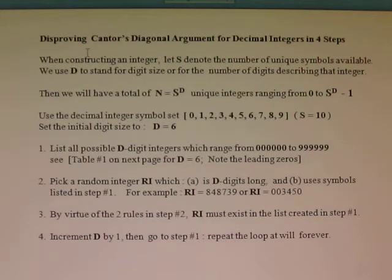Step 1: List all possible d-digit integers which range from 000000 to 999999, or one less than a million. See table number 1 on next page for d equals 6. Note the leading zeros.